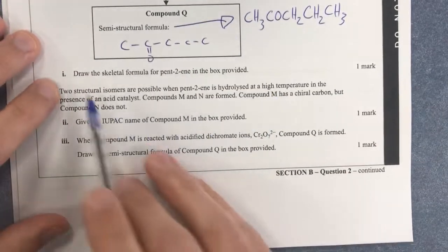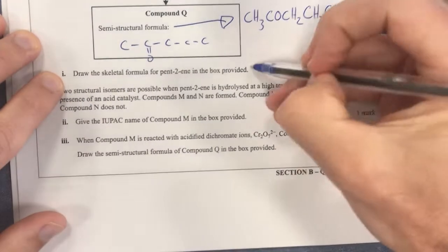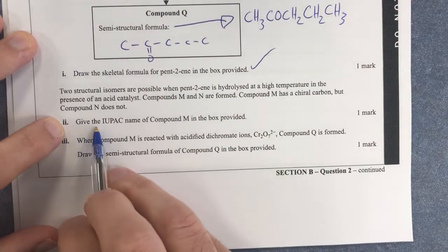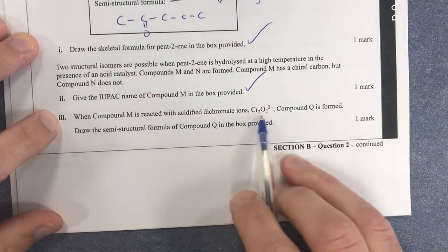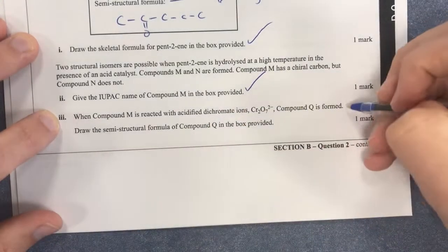I'm going to read the actual questions now as well. 1. Skeletal structure. Tick. Done that. 2. Give the IUPAC name. Done. 3. It's reacted with that and that's formed. Draw the semi-structure of done that. So therefore, let's move on to the next page.